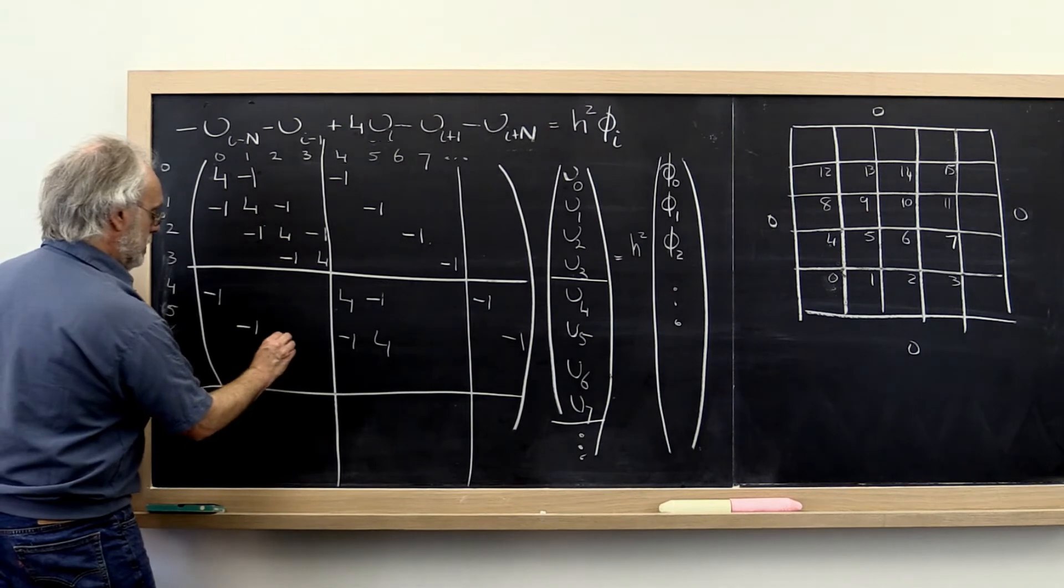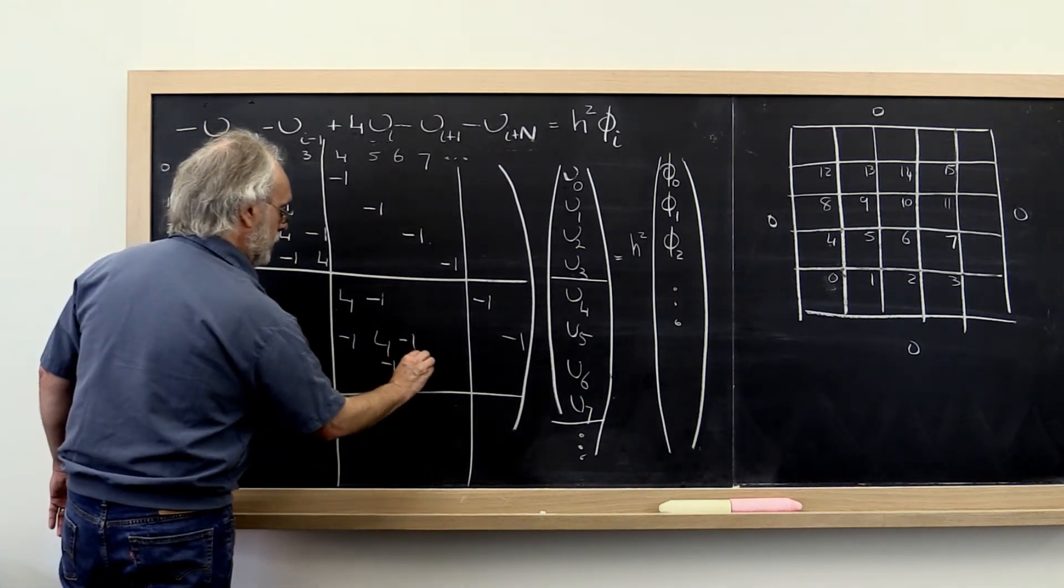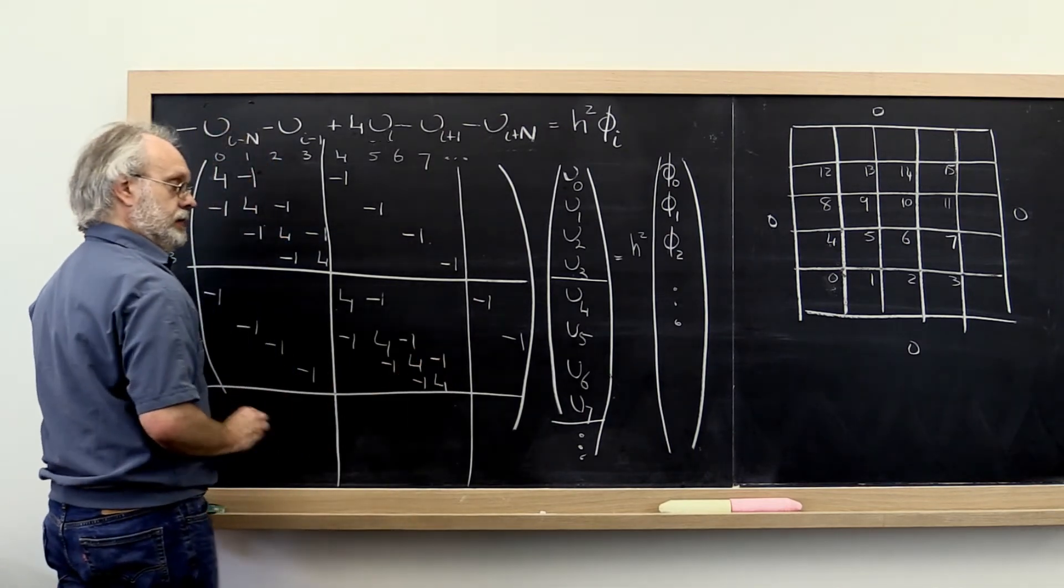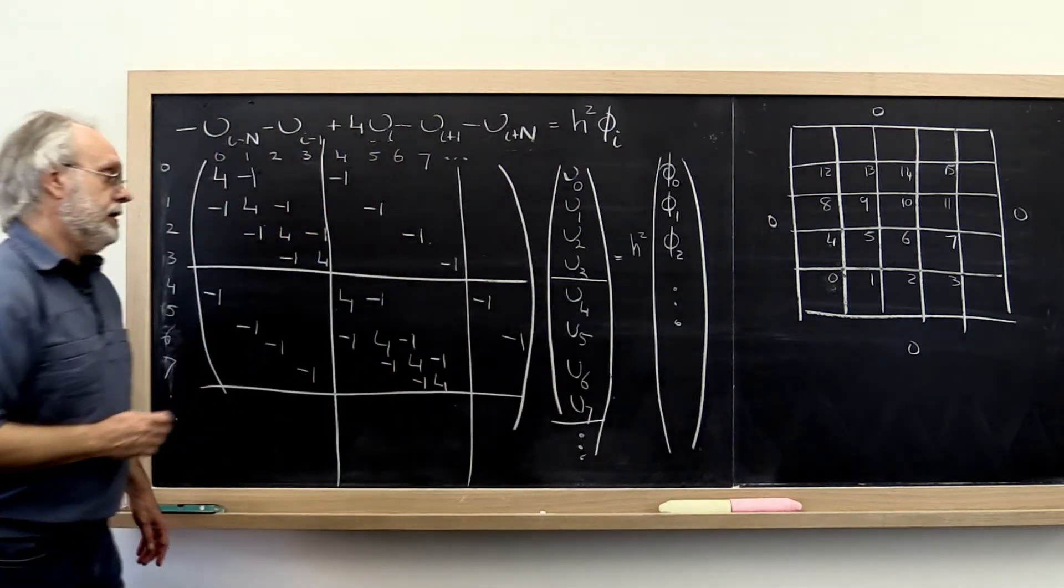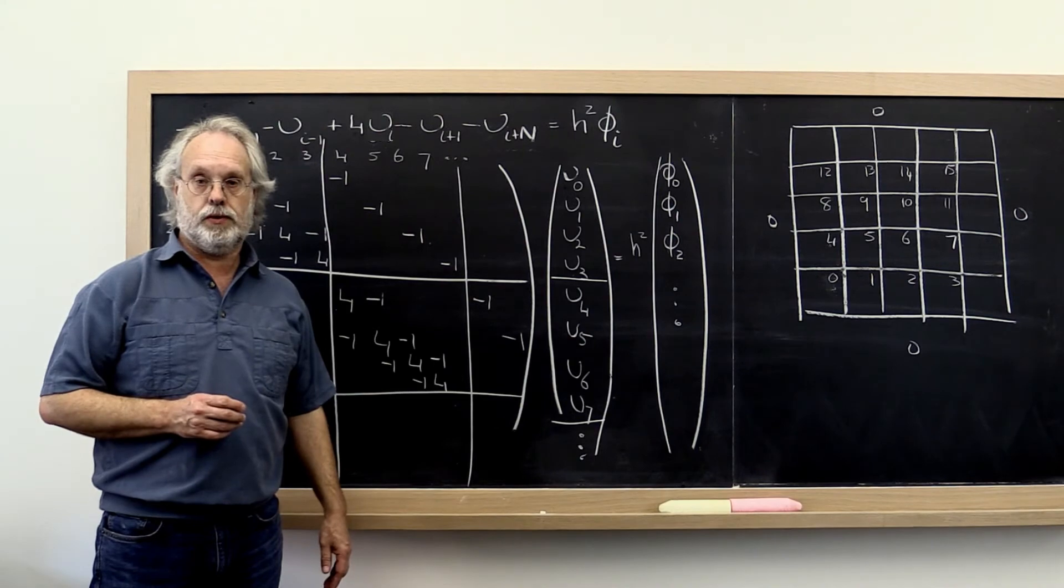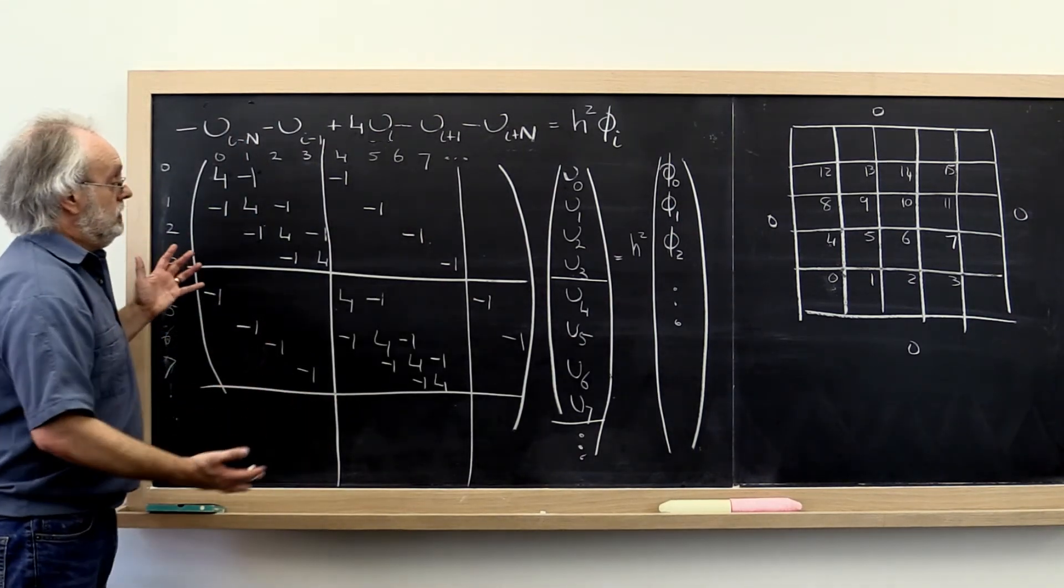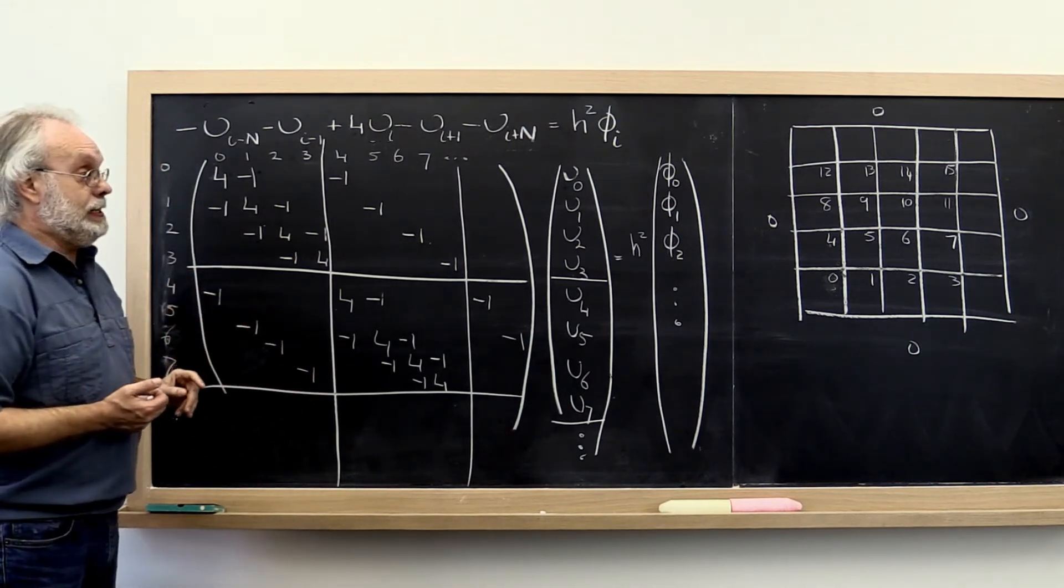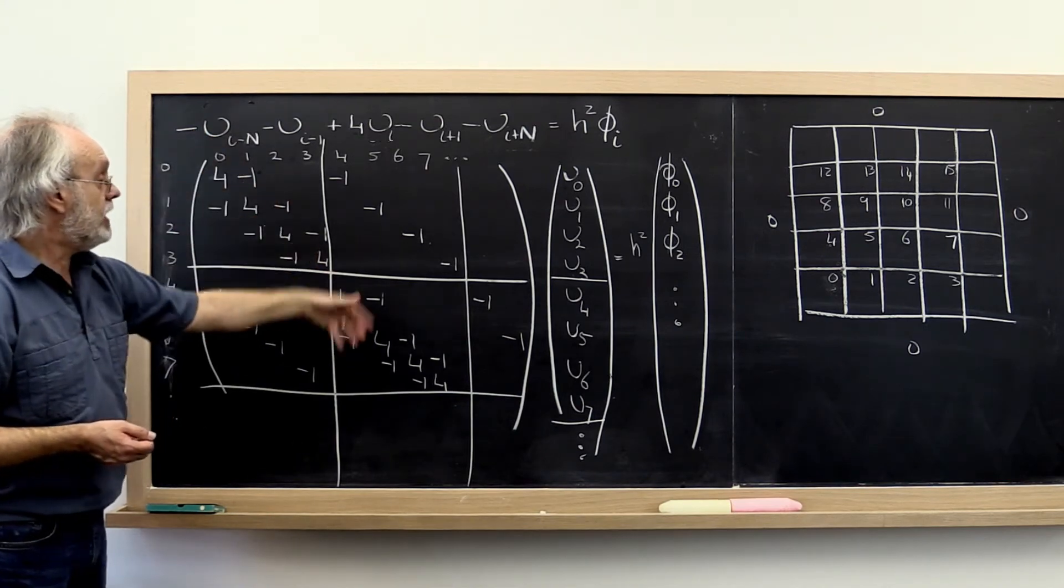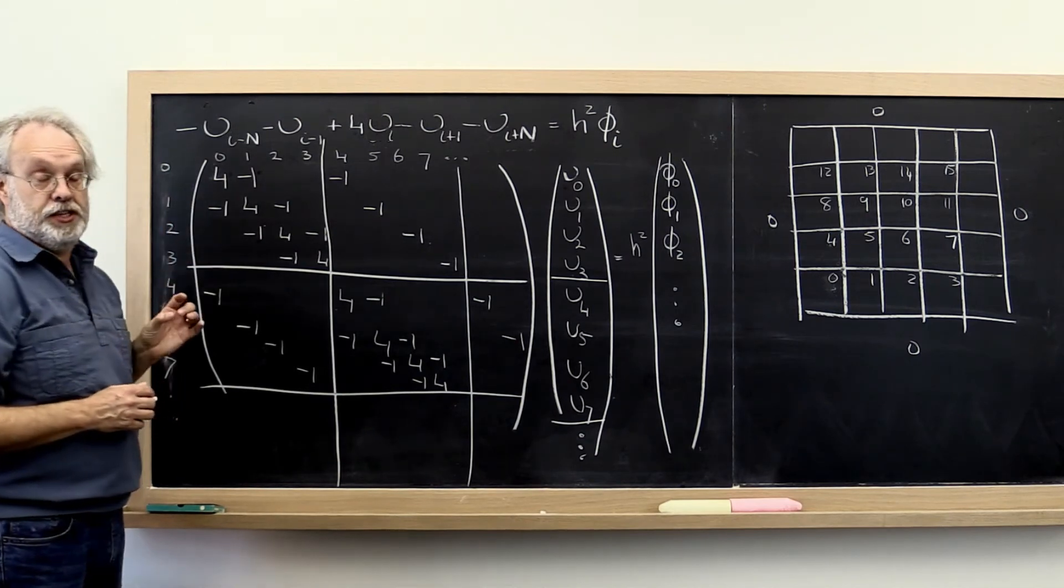We got this very distinctive tridiagonal matrix here. And here we also would get yet another block of minus 1's. What do we notice about this? Well, first of all, it has this very distinctive pattern where we end up with five diagonals that are non-zero, although they're not all clumped together. There's a big block of zero sitting right here.